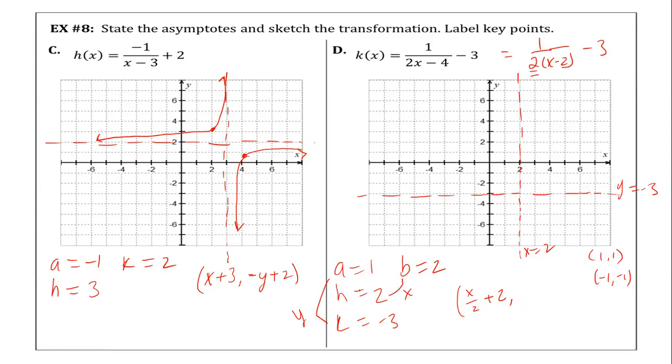And then our Y. Y doesn't lie. Y is what it is. A is one and our K is negative three. So it's Y minus three. These are the transformations that are taking place to these two points.